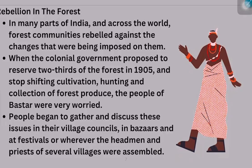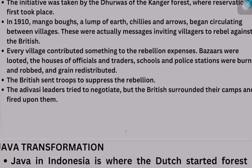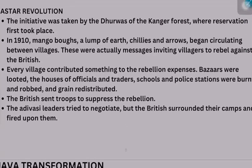The people started discussing this problem wherever they were gathered. Ultimately, a tribe called Dhurwas started the first revolution. They used mango wood branches, lumps of earth, chillies, and arrows — this is what we call guerrilla warfare — and these things were passed among their group members. Slowly, all the villagers joined in. The markets were looted, British schools and police stations were the first to be attacked.